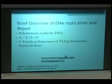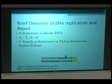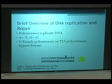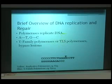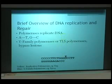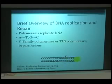This is a brief overview of DNA replication and repair. Polymerases are proteins that replicate DNA — A binds with T, G binds with C. Y-family or translesional polymerases bypass lesions. In this animation, you can see the polymerase reading the template strand and placing the correct base in the complementary strand. The X represents a lesion like thymine glycol, requiring a special polymerase to bypass it — that's the big blue one, like DPO4. It goes across the lesion, and then the normal polymerase comes back in and copies the rest of the DNA.